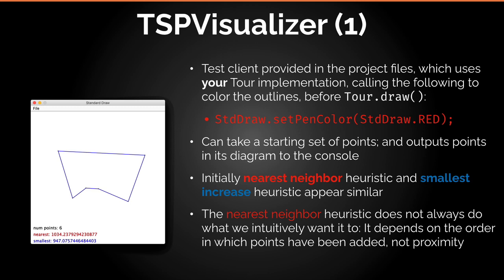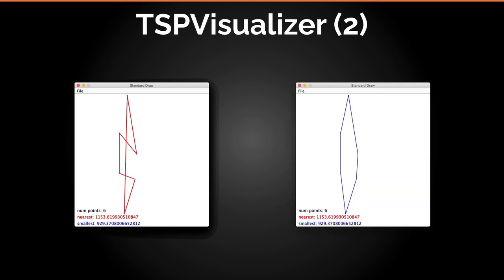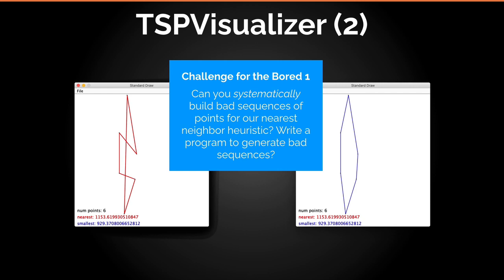The head contains only a reference to a node — nothing else. The heuristics are implemented as different methods within the same class. For extra credit, we suggest different heuristics that you can implement separately in a different class. One challenge for the curious: can you systematically build bad sequences of points for the nearest neighbor heuristic? If you want to challenge yourself, think of a program that specifically builds instances — sequences of points — that will be really bad for nearest neighbor.